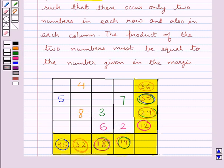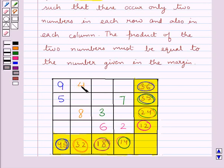Now you can see that we have number 9 placed here. We now have two digits in each row and in each column, and the product of the two numbers is equal to the numbers given in the margin. That is: 9 multiplied by 4 is 36, 9 multiplied by 5 is 45, 4 multiplied by 8 is 32, 6 multiplied by 3 is 18, 2 multiplied by 7 is 14, and 7 multiplied by 5 is 35.